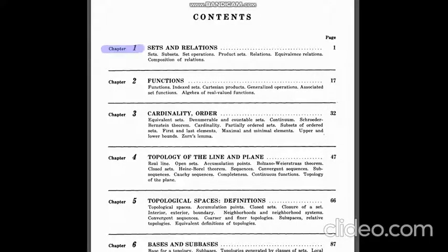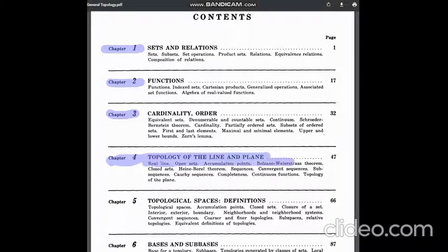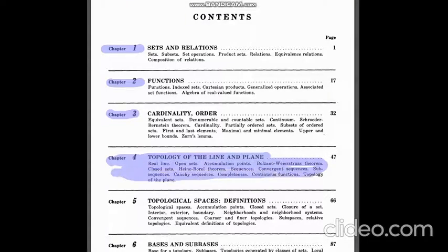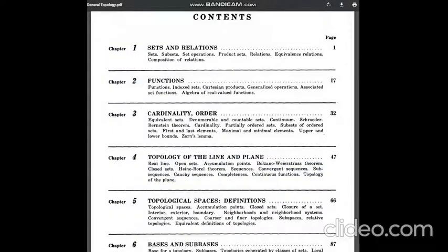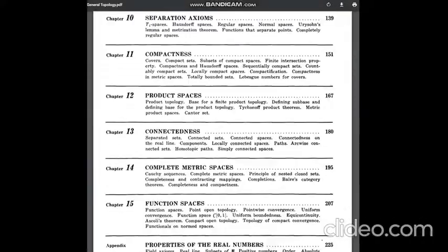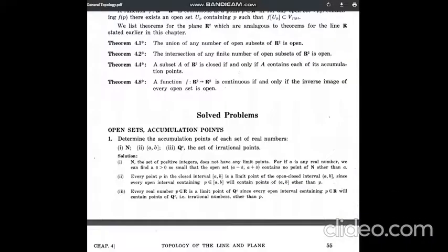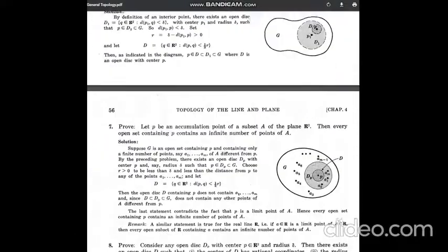However, the first three chapters are dedicated to set theory, and the fourth chapter is a review of topology and the line and plane, which was a part of Real Analysis Part 1. So the main topological stuff starts from chapter 4. As I said earlier, the book has a rich number of solved problems, which is really very helpful to students.